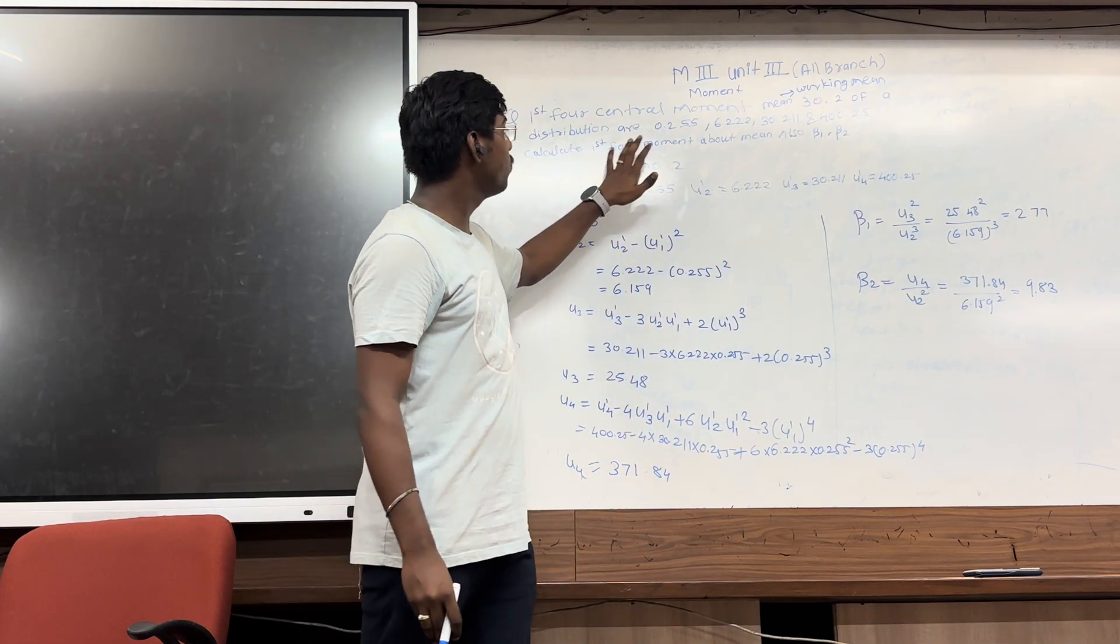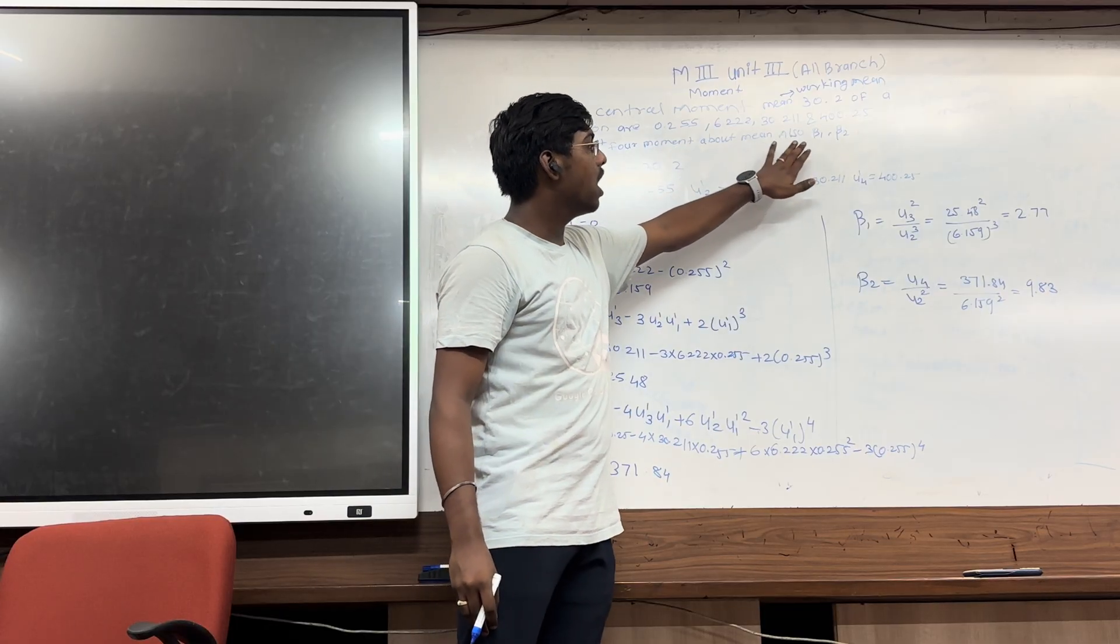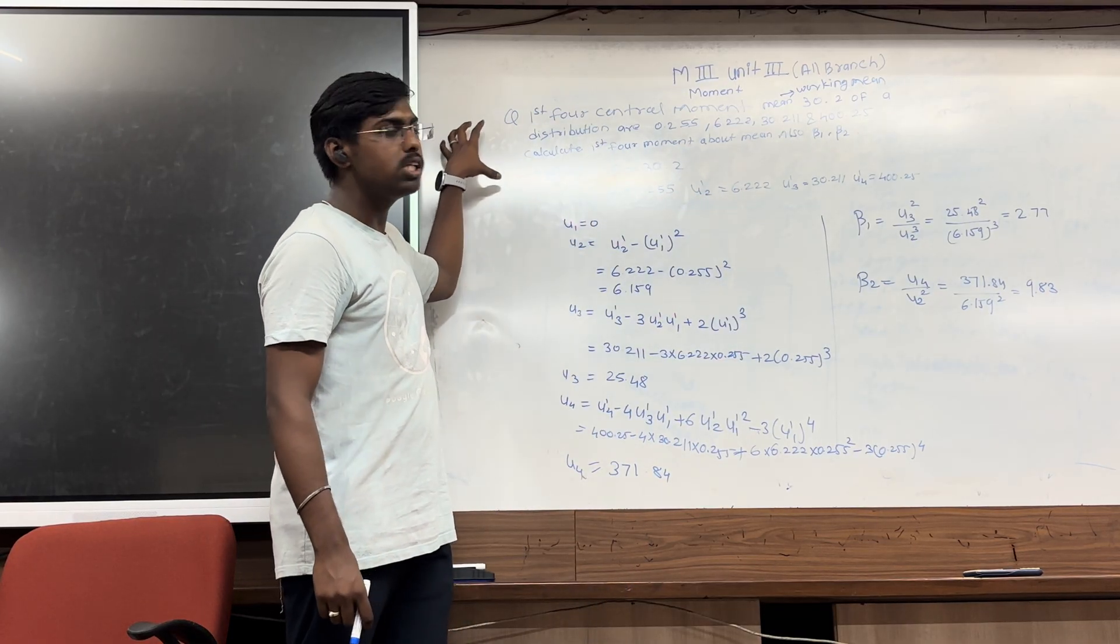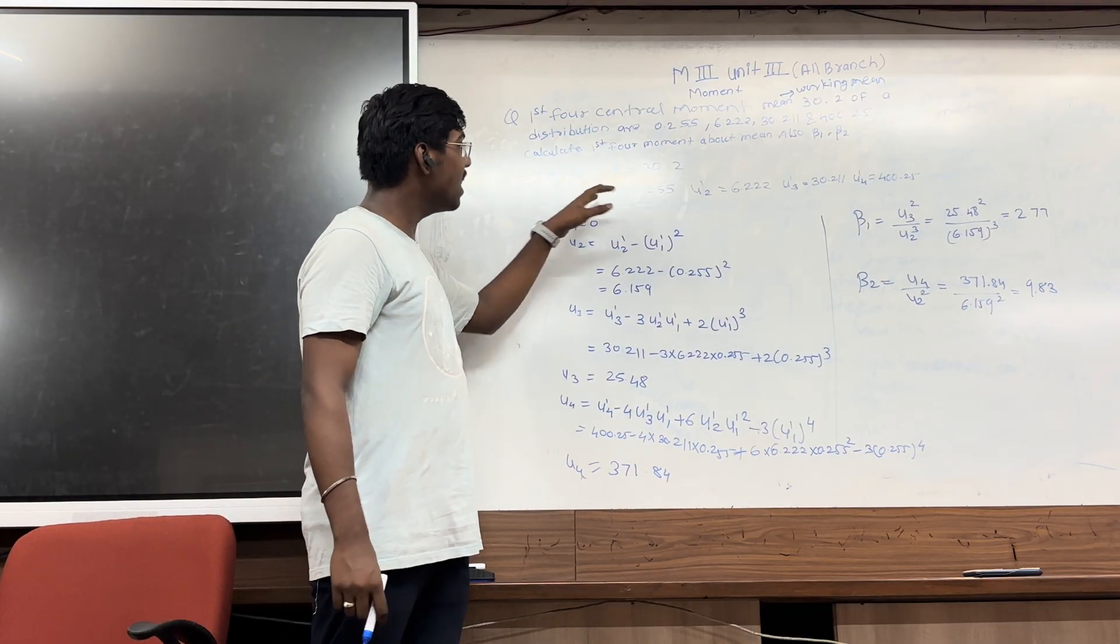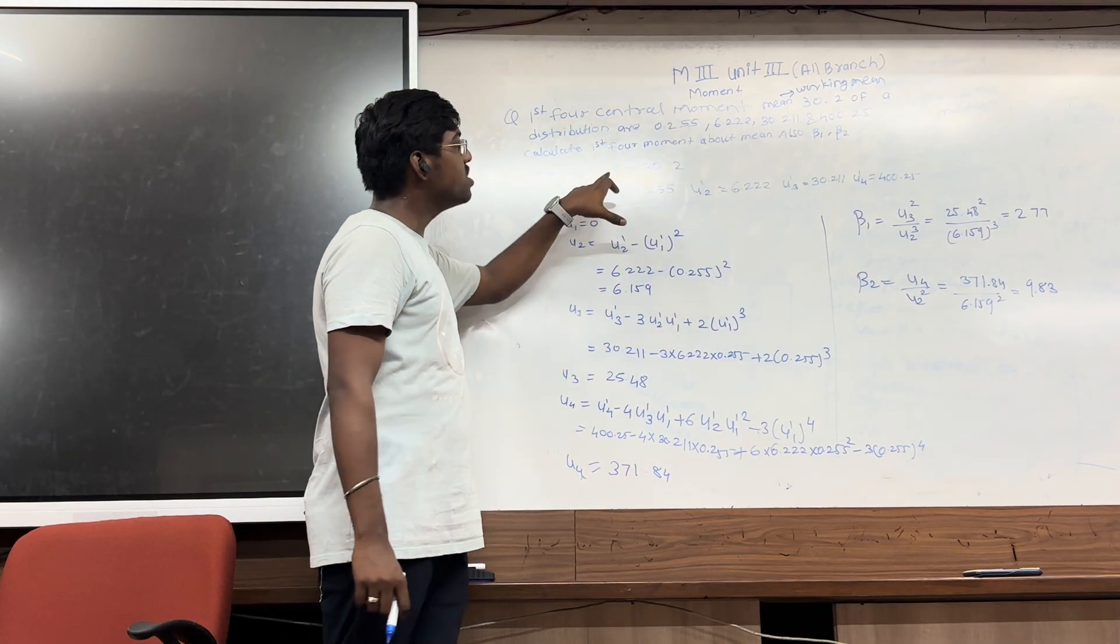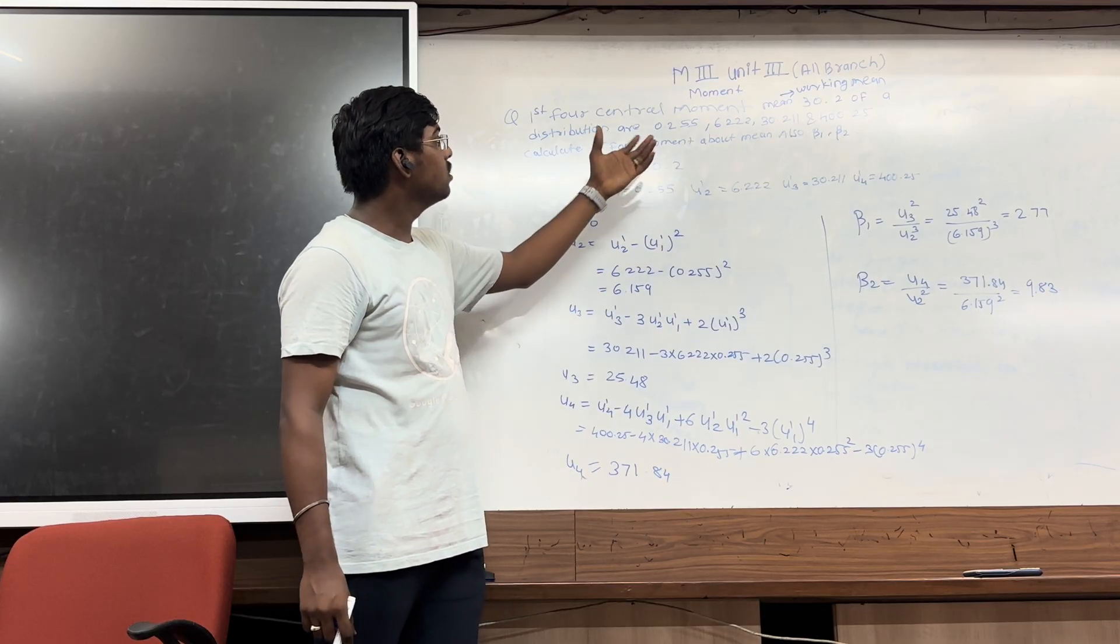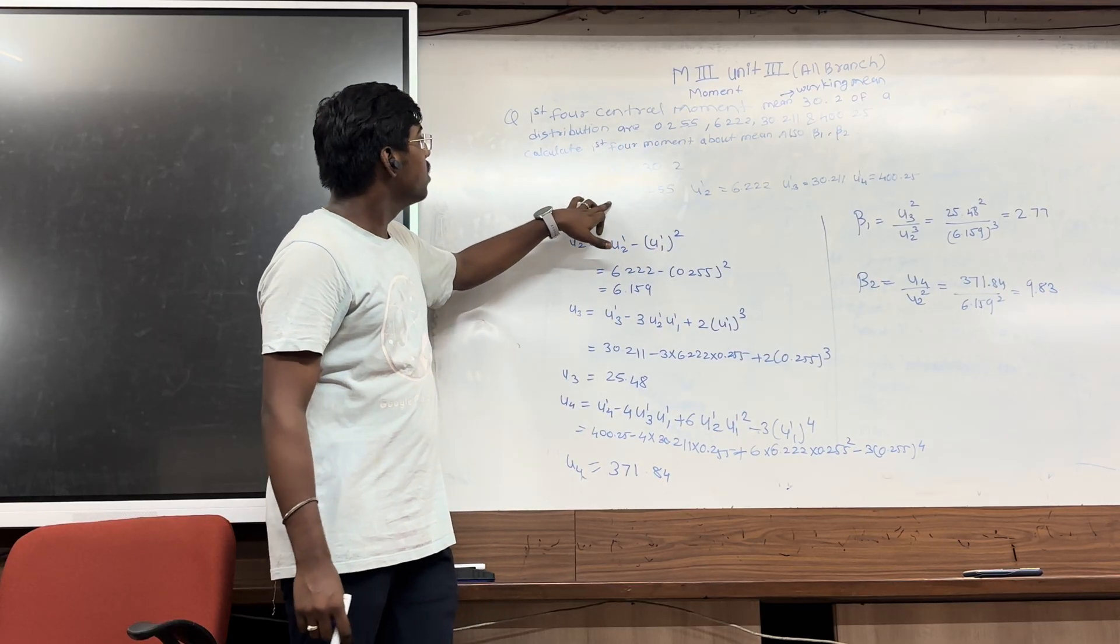Calculate the first 4th movement about the mean and also beta1 and beta2. So in this question, the solution is given that the working mean or mean is A, the A is equal to 13.2, and the given values are the raw moments.